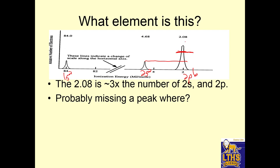So the 2.08 is three times the number of 2s and 2p. So that means we have 1s, 2s, 2p. So it's three times as much. I'm probably missing a peak, and it's not shown.